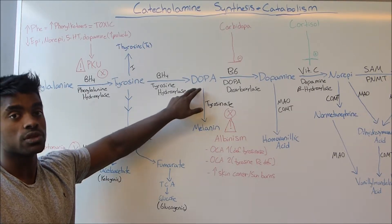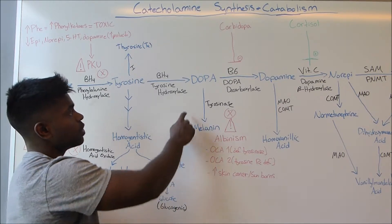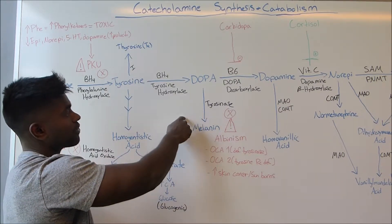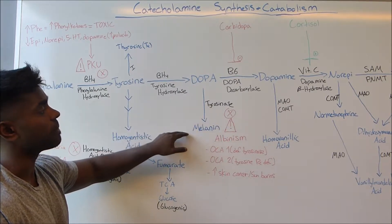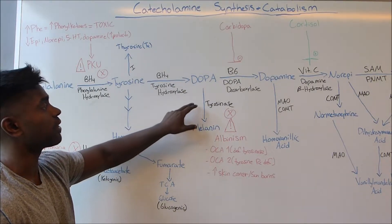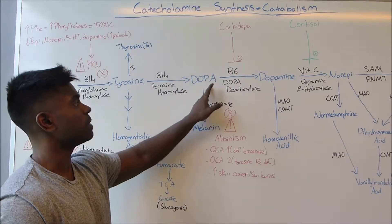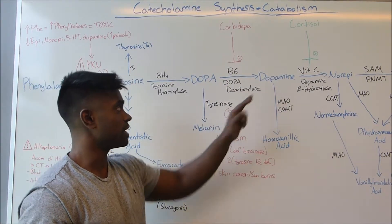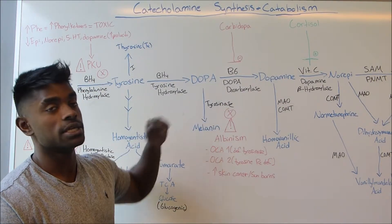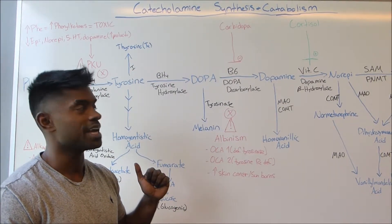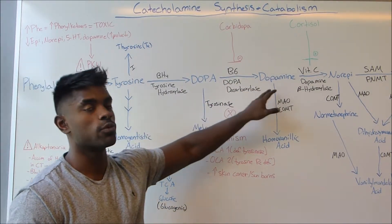once we form DOPA as a result of that hydroxylation previously discussed, DOPA can actually be converted into melanin using the enzyme tyrosinase. Furthermore, DOPA can be converted into dopamine using an enzyme called DOPA decarboxylase, which makes sense because we're removing a carboxyl group from DOPA to form dopamine.